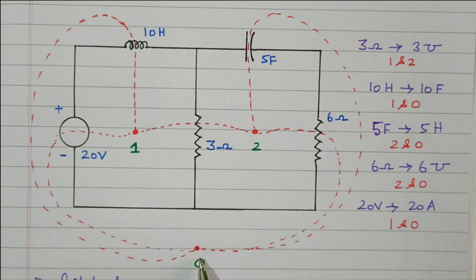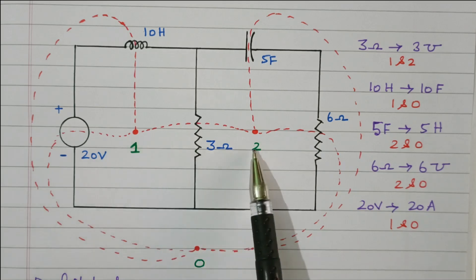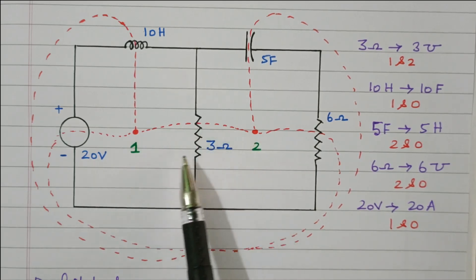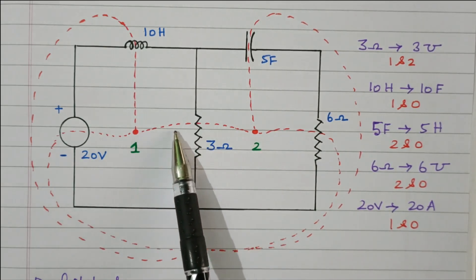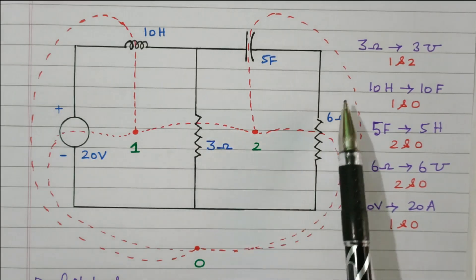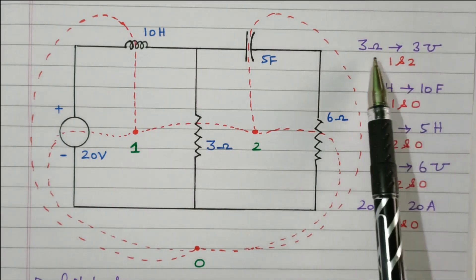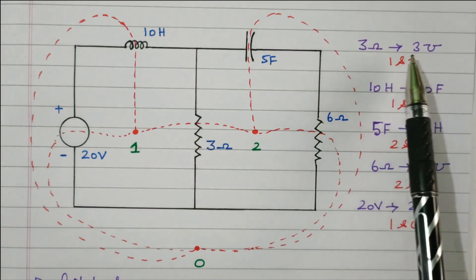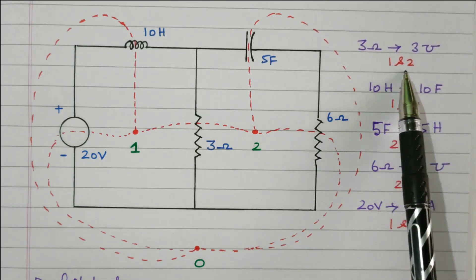Step 2 is put the dot outside the network, called a reference node. Now we need to connect all the dots. First, we will connect dot 1 and 2 through the 3-ohm resistor. Between 1 and 2, the 3-ohm resistor is connected by a dotted line. This is nothing but the dual network. This 3-ohm is converted into 3 Mho conductance — resistance is converted into conductance, ohm converted to Mho.